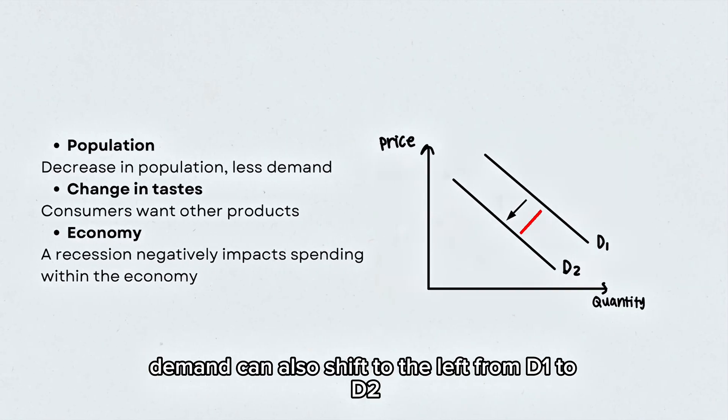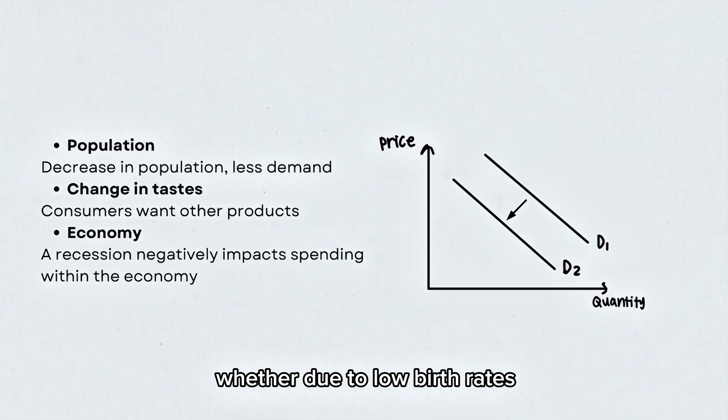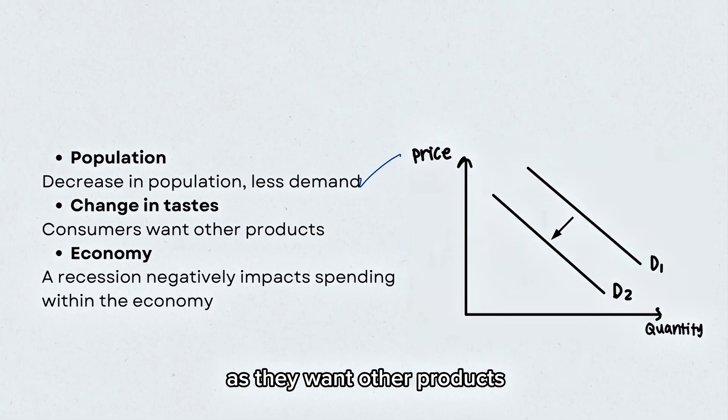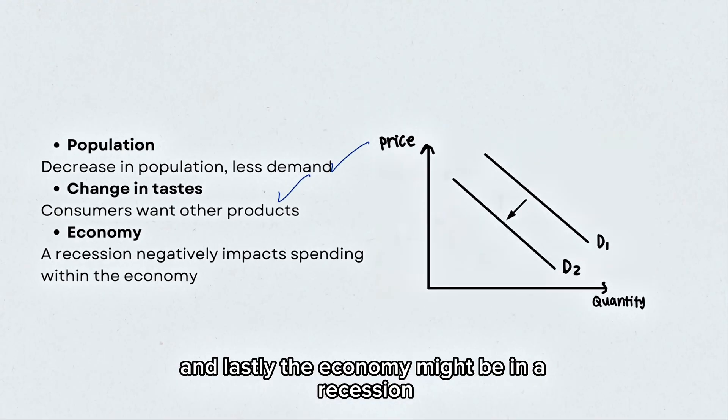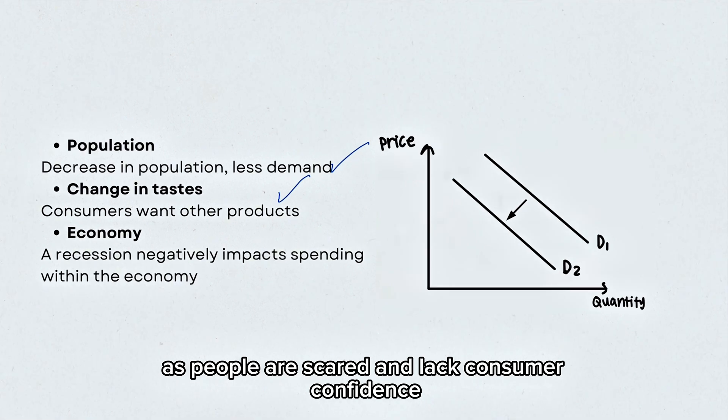Demand can also shift to the left from D1 to D2. This is caused by a decrease in the population, whether due to low birth rates or people leaving the country, which inevitably leads to less demand. Consumer preferences can also change as they want other products. And lastly, the economy might be in a recession, which negatively impacts spending within the economy as people are scared and lack consumer confidence.